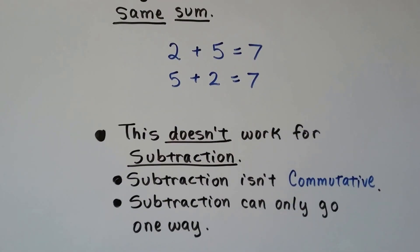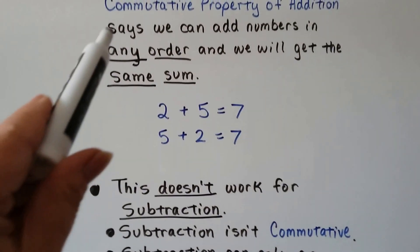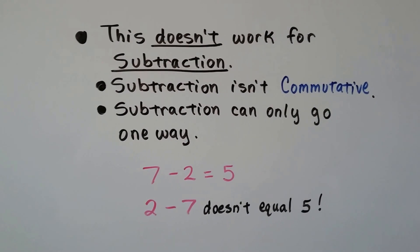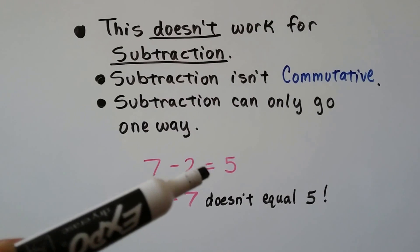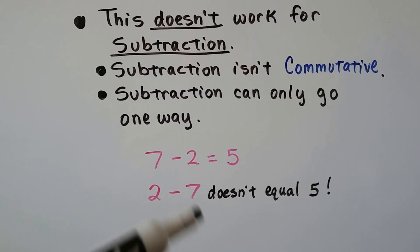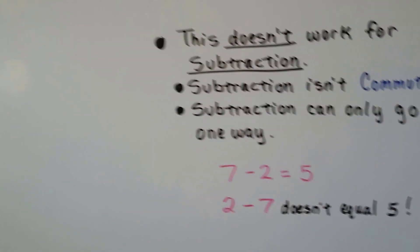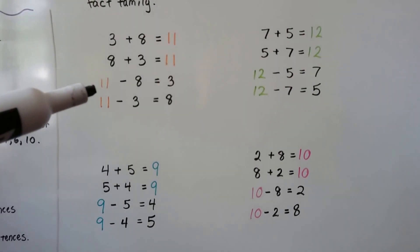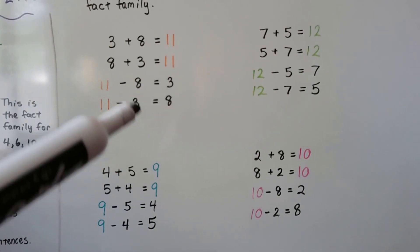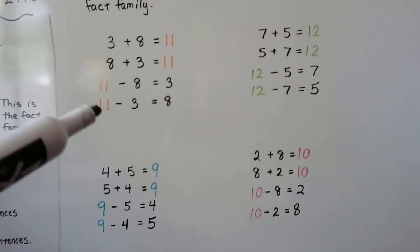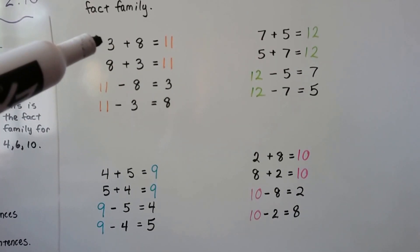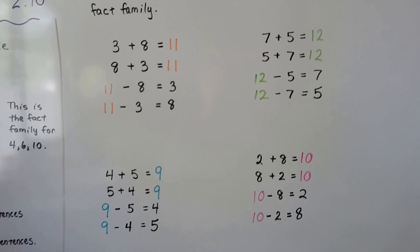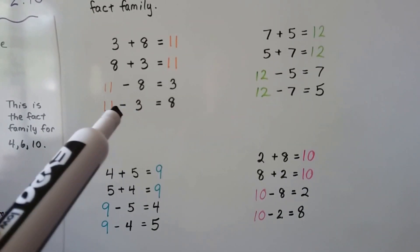And this doesn't work for subtraction — subtraction isn't commutative. Commutative property of addition? So subtraction can only go one way. We have 7 minus 2, that equals 5. But 2 minus 7 doesn't equal 5 — that doesn't work. So if you notice in our fact families, looking at the subtraction sentences, the subtrahend and the difference changed places, and the minuend stayed the same in the front. And in the addition ones, the addends traded places, and the sums stayed the same. So the two front numbers can't trade places in subtraction — only in addition.